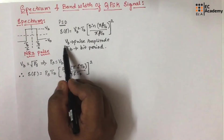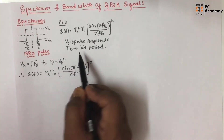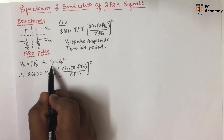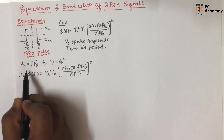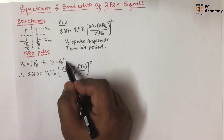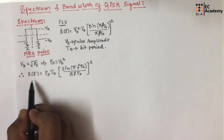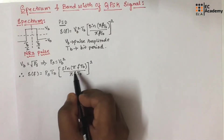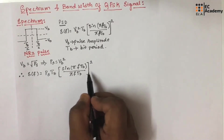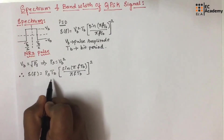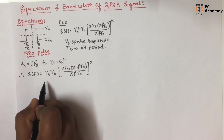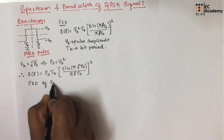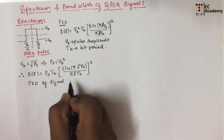Here VB is the pulse amplitude and TB is the bit period. We know that VB = √PS, which gives us PS = VB². Substituting PS in place of VB² in the above equation, we get S(f) = PS · TB · [sin(πfTB) / (πfTB)]². This expression gives the power spectral density of signal B(t).